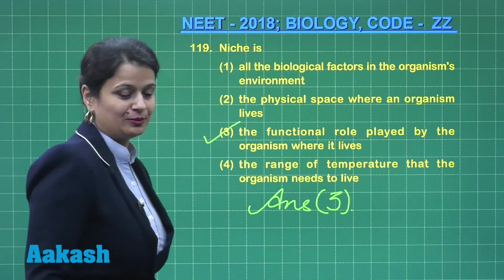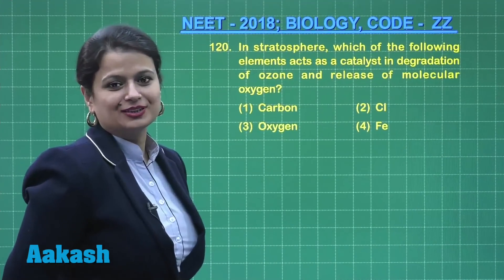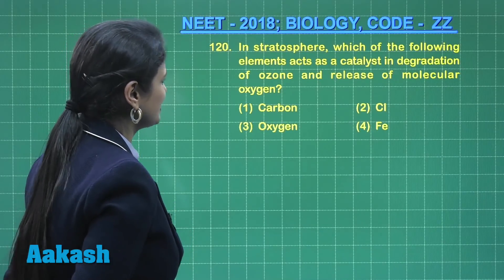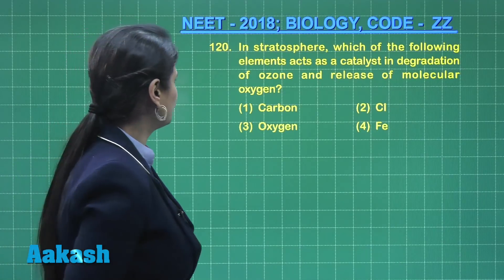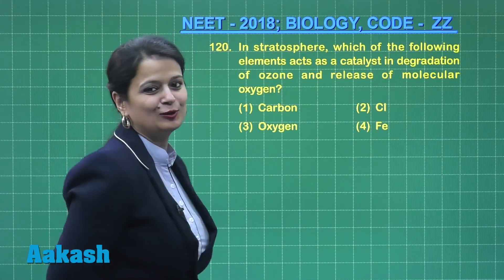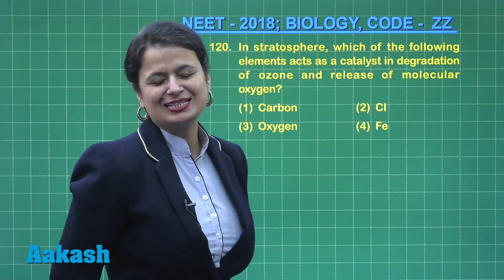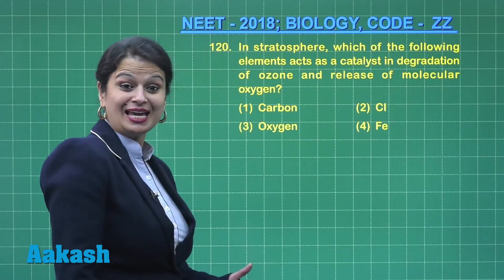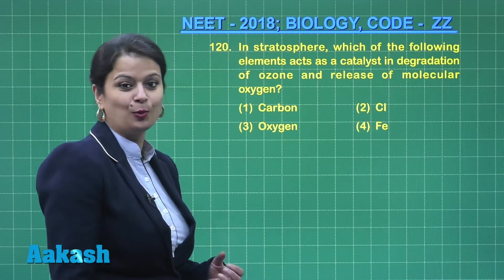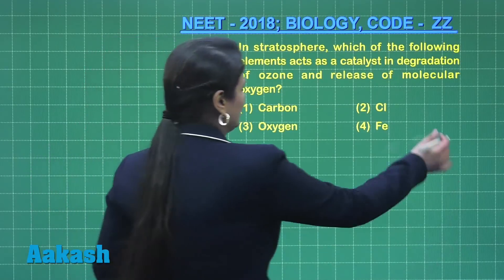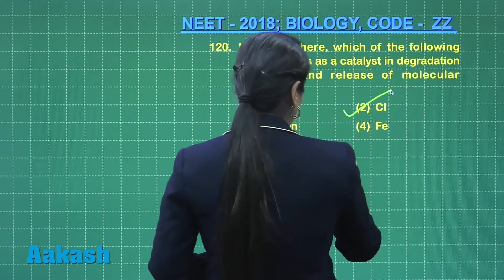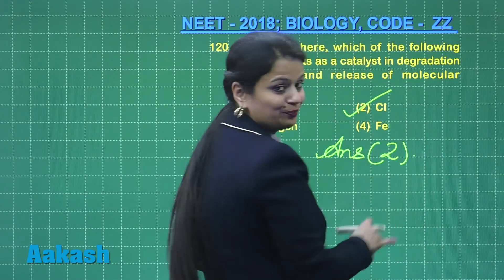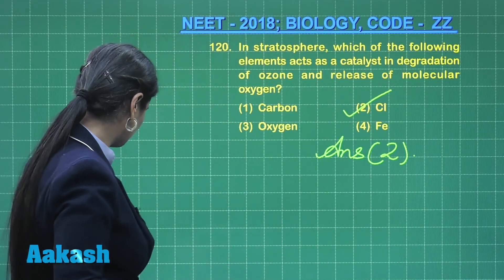Moving to question 120: in the stratosphere, which of the following elements acts as a catalyst in the degradation of ozone and release of molecular oxygen? This is a simple question — chlorine atoms are highly reactive, they work like a catalyst and cause the breakdown of ozone molecules. So the answer to this question is option number two.